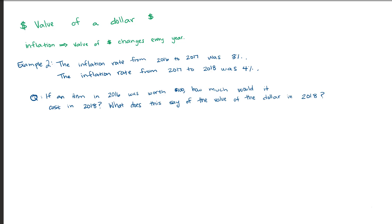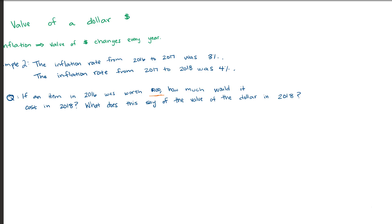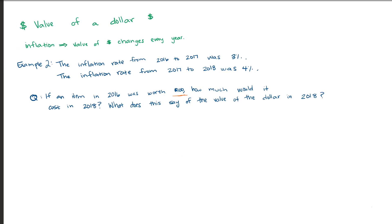The inflation rate from 2016 to 2017 was three percent. From 2017 to 2018, it was four percent. Now suppose we're looking at an item from 2016 that was worth a hundred dollars. Let's first find out how much it's going to cost in 2018. So again, just like we covered in percentages, we have our original price or our old value. And now we're going to be applying two rates to it and it's going to increase.